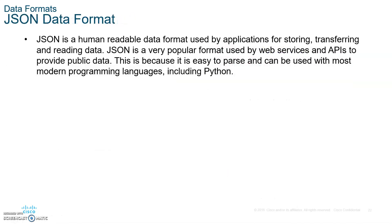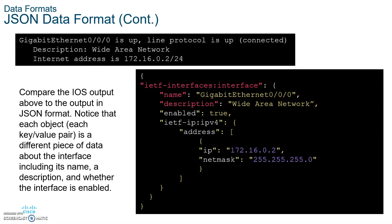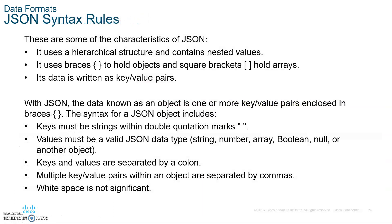JSON is a human-readable data format used by applications for storing, transferring, and reading data. It is easy to parse and can be used with most modern programming languages — Python uses JSON. For example, this is the actual program that executes it for you. Compare the IOS format: notice that each object is wrapped in brackets. We don't need to get into that in depth unless you're going to be a programmer yourself — these are just good to know.